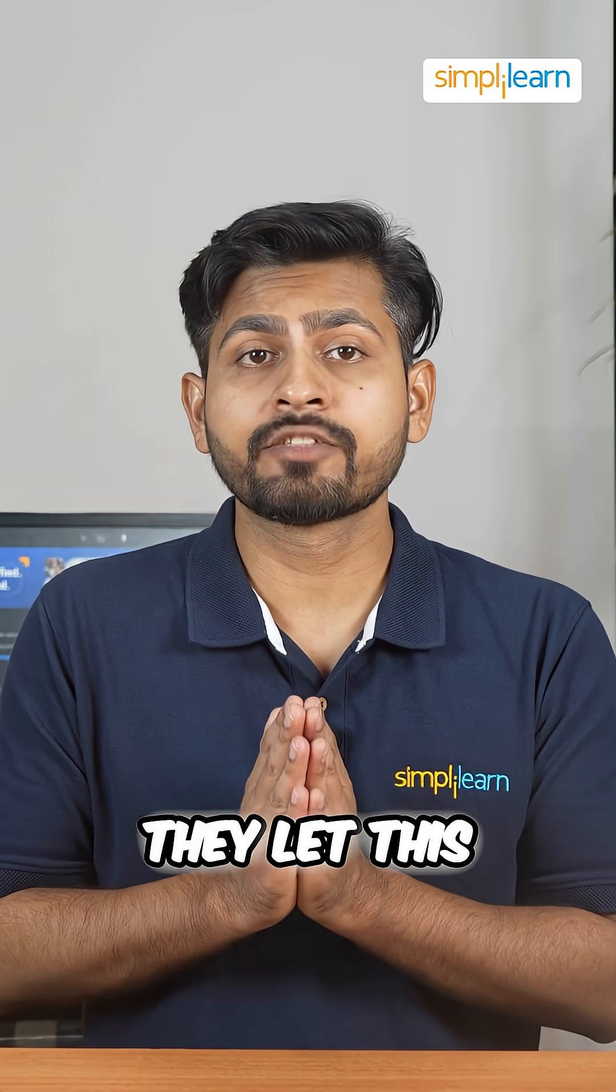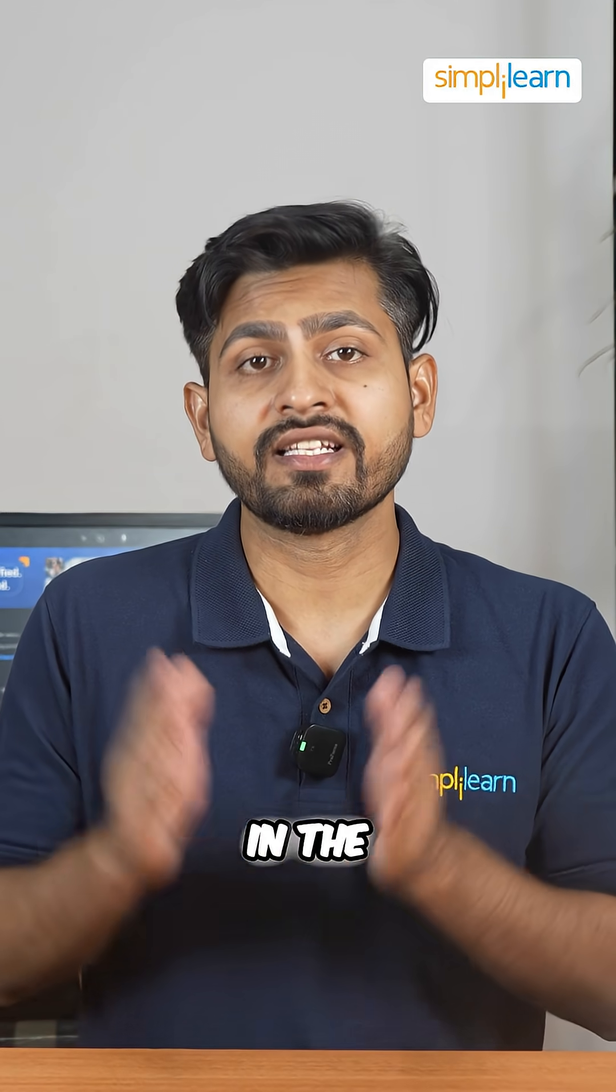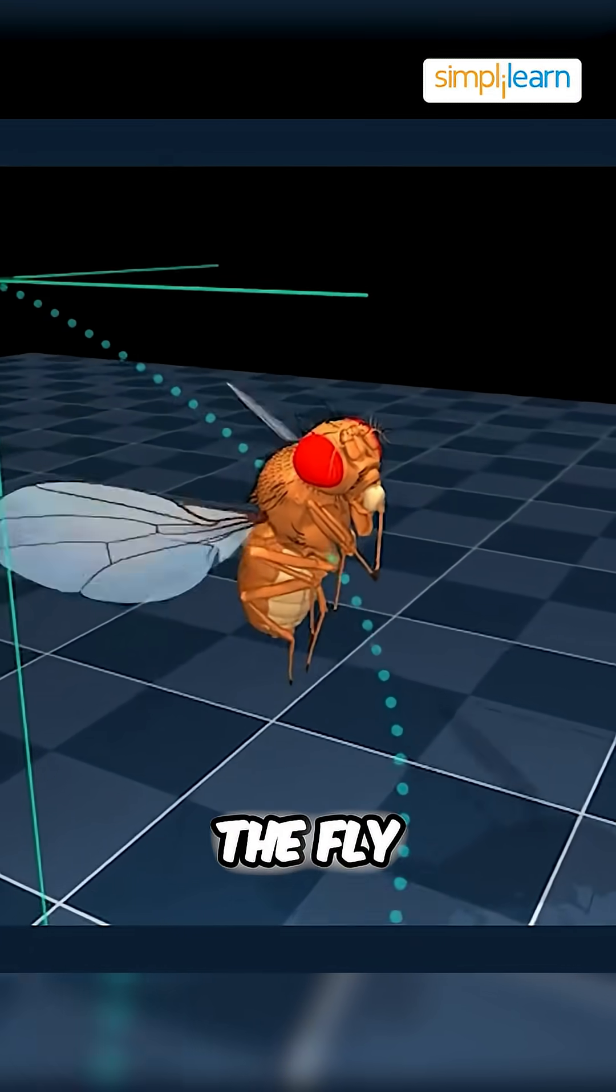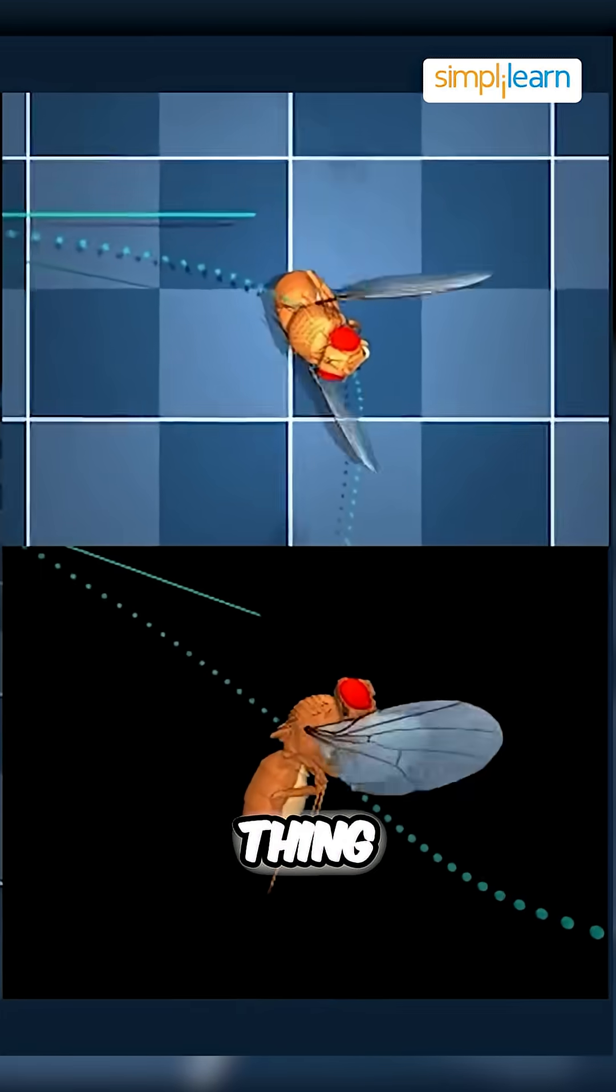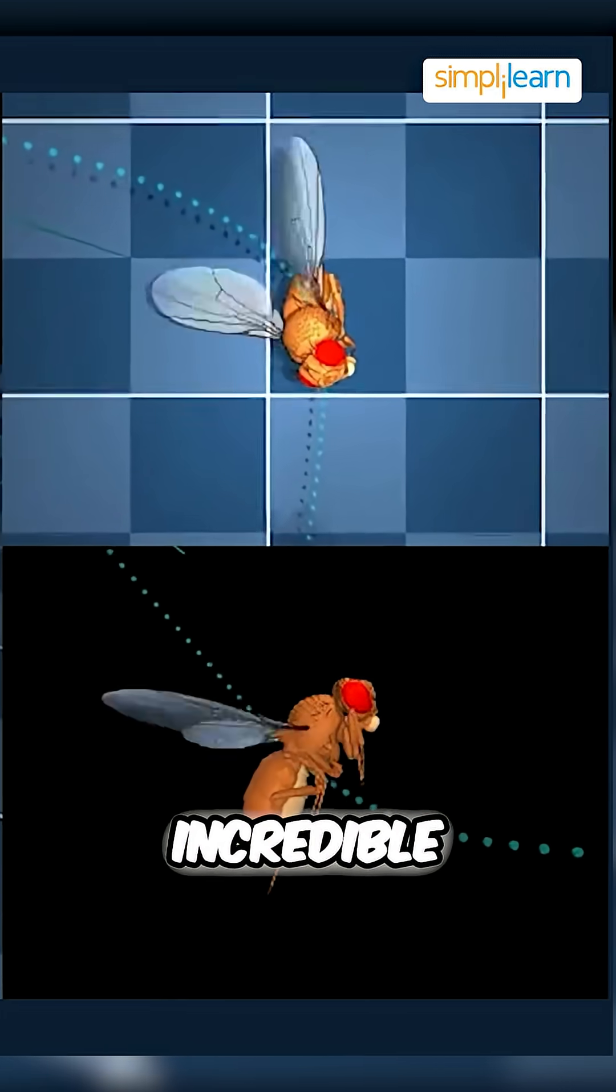And once trained, they let this brain control the fly body in the simulator. The result was pretty impressive—the fly moved exactly like a real thing, adjusting its speed and flying with incredible precision.